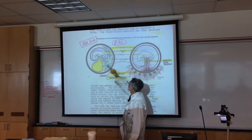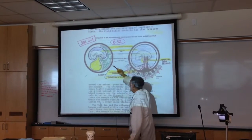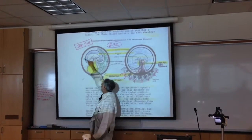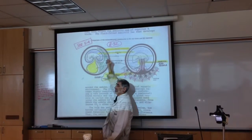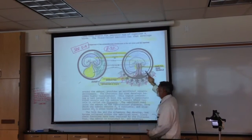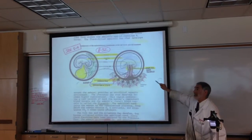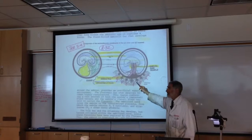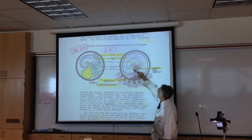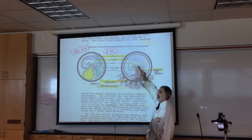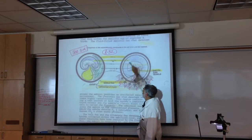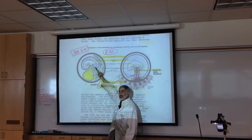with the yolk sac for nourishment, and the allantois sac for waste. And represented by the thick black line is the outer Chorionic sac. Then we compared that, and we showed you what exists in mammals, including us. Here's what it is. The human baby and the piggy develop in a fluid-filled Amniotic sac, just like in the chicken.